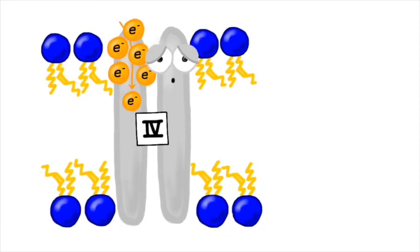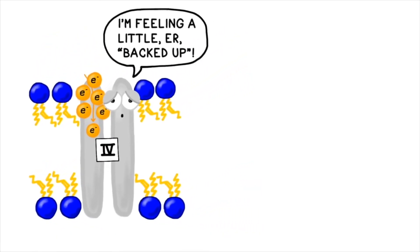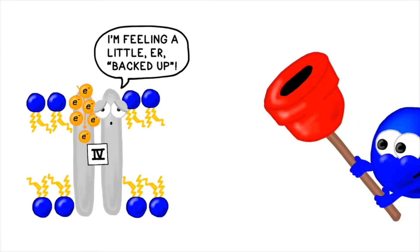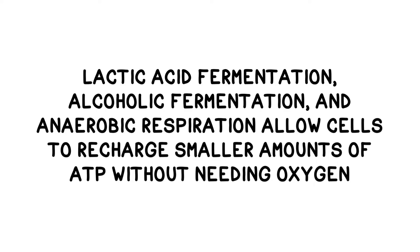The downside of aerobic respiration is that it requires a steady input of oxygen as a final electron acceptor in order to run the electron transport chain and recharge the ATP. The oxygen has to suck up the electrons that come out of the end of the chain, keeping the electrons flowing, the proton pumps going, and the ATP synthase protein working. Without oxygen, the electron transport chain will become clogged and everything will stop functioning. Luckily, lactic acid fermentation, alcoholic fermentation, and anaerobic respiration can allow cells to recharge small amounts of ATP without needing any oxygen, making them very useful processes under certain circumstances.